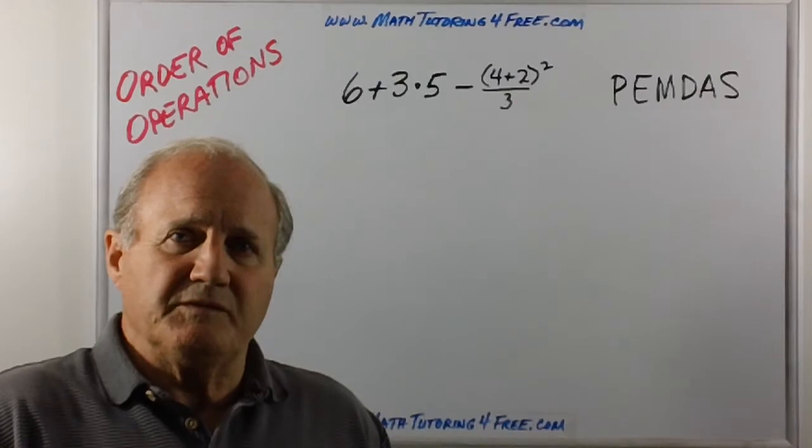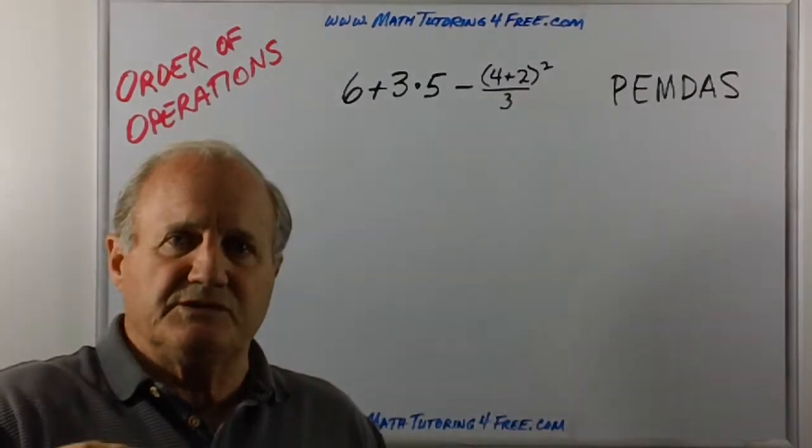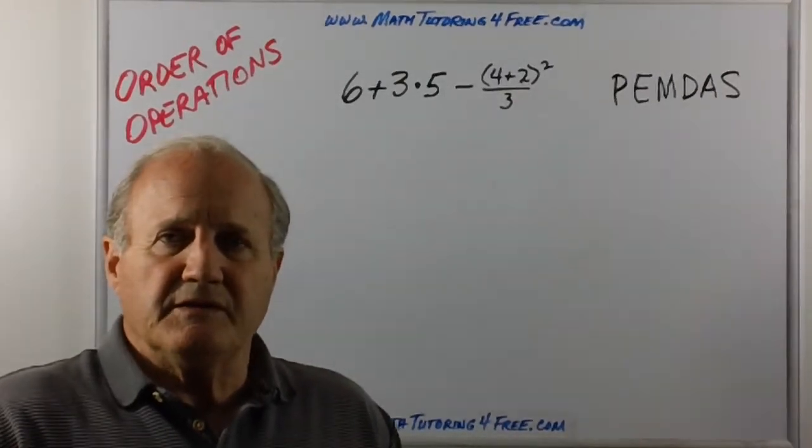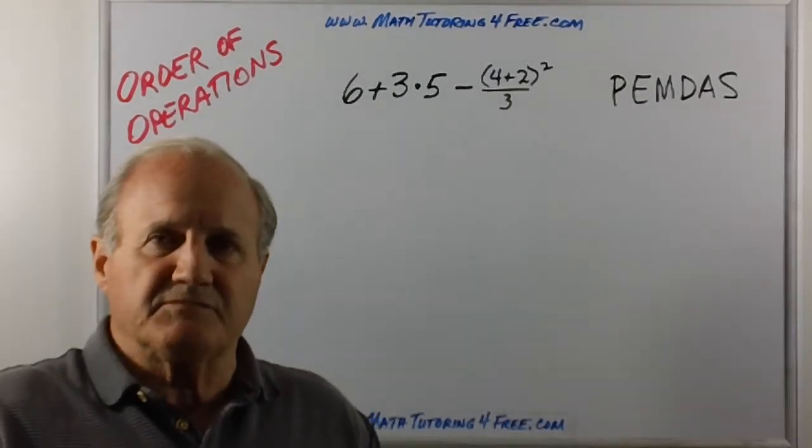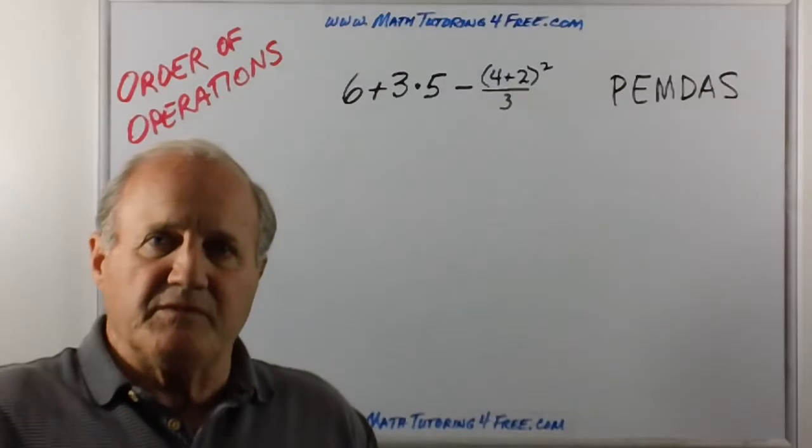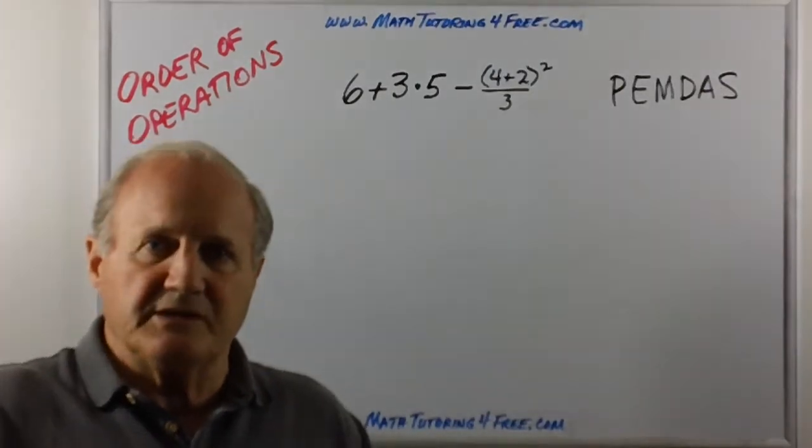By order of operation, we mean we must have a sequence in which we do our simplification. When we have an arithmetic or algebraic expression, we've got a number of different operations: addition, subtraction, multiplication,